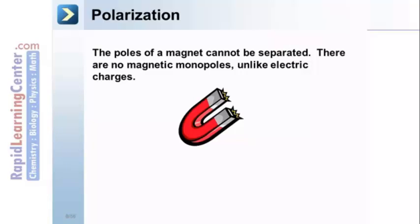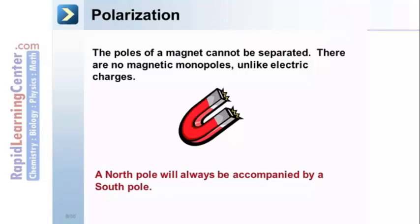Where you can have a single, isolated, positive charge. A north pole will always be accompanied by a south pole for magnetism.